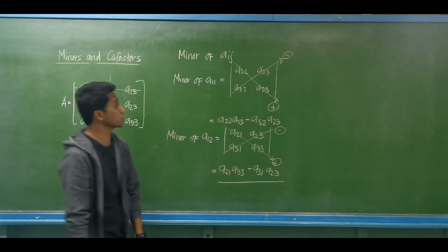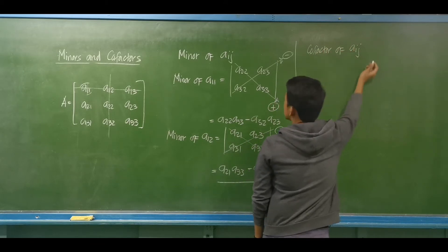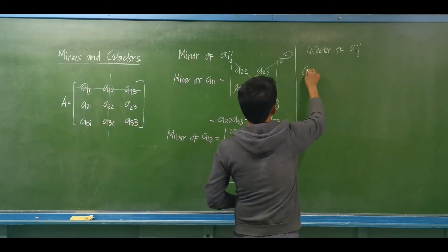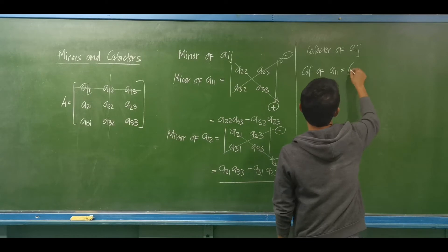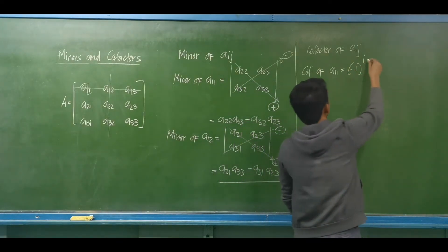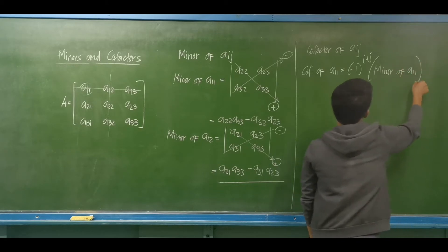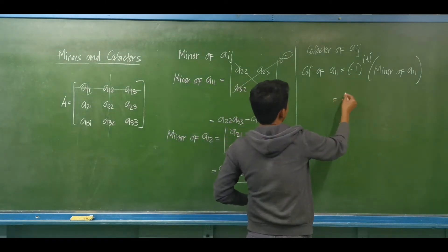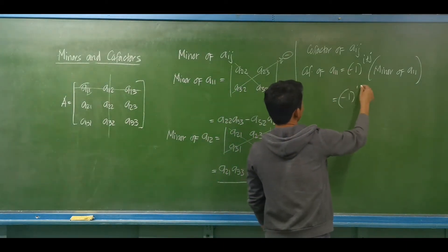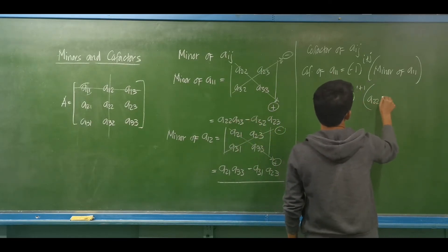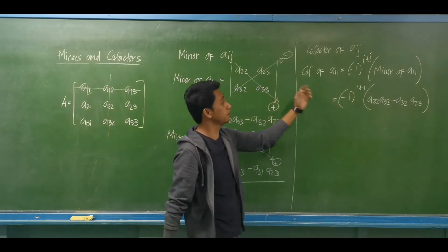Now for cofactors. The cofactor of element A-sub-ij equals (−1)^(i+j) multiplied by the minor of A-sub-ij. For example, the cofactor of A11: the row number is 1 and column number is 1, so it is (−1)^(1+1) multiplied by the minor of A11, which is A22·A33 minus A32·A23. Since (−1)^2 is positive, the cofactor of A11 is positive times the minor.